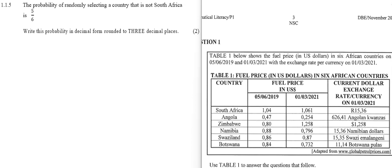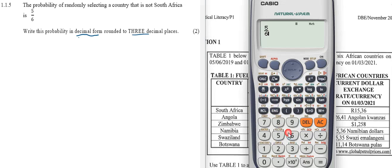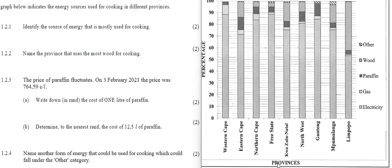Question 1.1.5: The probability of randomly selecting a country that is not South Africa is 5/6. Write this probability in decimal form rounded to three decimal places. We are given the probability as a fraction, 5/6. To write it as a decimal, press equal and the S to D button that converts the fraction to a decimal. We must only have three digits after the comma, so the answer will be 0.833, and that is the solution.